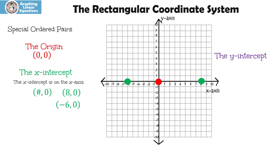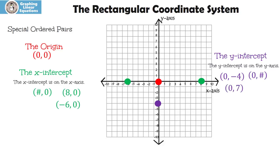The y-intercept is another one — and you got it — the y-intercept is on the y-axis. The y-intercept is always zero for the x and some number for the y. Let me show you an example: zero, negative four. You'll notice that it's zero on the x and negative four on the y. What about zero, seven? Once again, it's zero on the x and seven on the y.